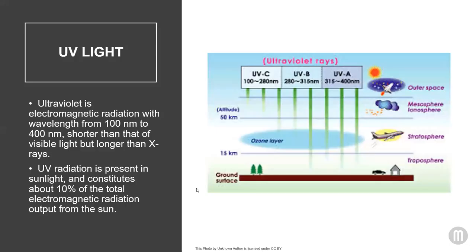A quick review on UV light: UV light is invisible — it has a shorter wavelength than visible light but longer than X-rays. The sun emits three types: UVA, UVB, and UVC. UVC is blocked by the ozone layer, UVB is partially blocked, and both UVA and UVB reach the Earth's surface and can penetrate our skin. UVB rays have a shorter wavelength reaching the outer layers of your skin, while UVA rays have longer wavelengths and can penetrate deeper into the middle layers.